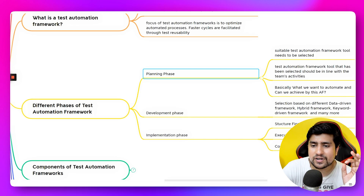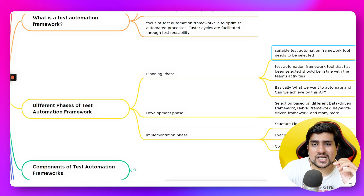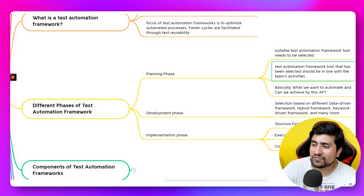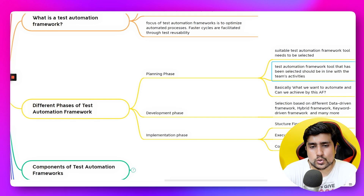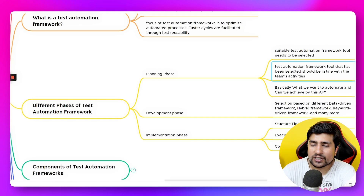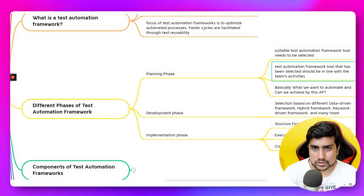There are three phases: a planning phase, a development phase, and an implementation phase. In the planning phase, you select what to include in the framework. The tool should be selected in line with your team's skills — for example, if your team is comfortable with JavaScript, you might go with Cypress or Playwright rather than Selenium with Java.